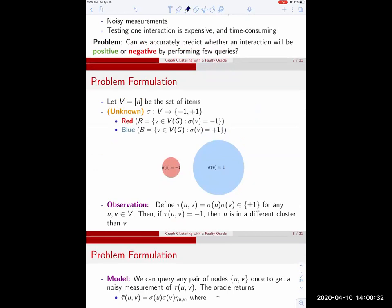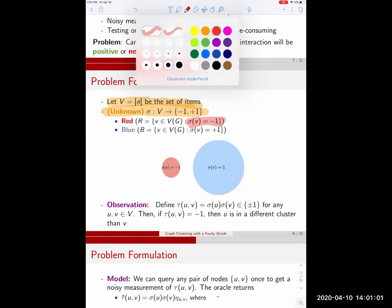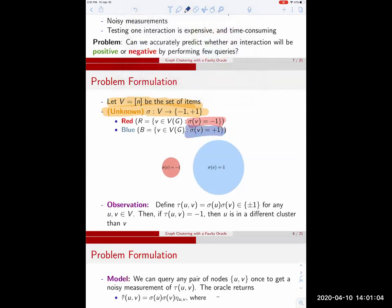In this paper we study a very clean mathematical model. We have n items and we have a function sigma which is the latent clustering function that we don't know. We have two clusters, the red and the blue cluster. The nodes that map to minus one are the red and the other ones the blue. We define this quantity tau uv which is the product of sigma u times sigma v. It's between plus one and minus one, plus one for pairs of nodes inside the same cluster and minus one across the cluster.